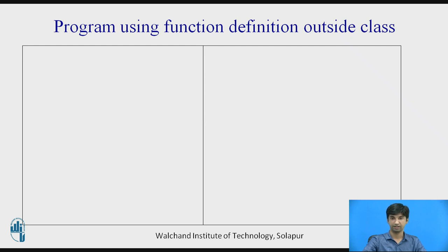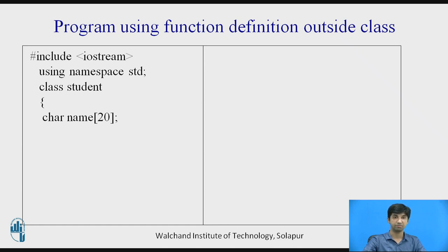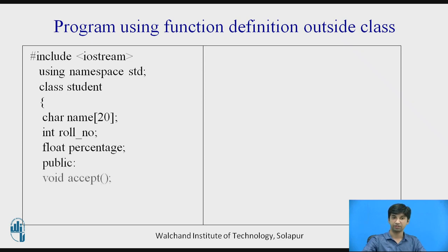And displaying it on the screen finally. The common part is the header file — #include iostream, the input output stream header file, which includes cout and cin. Then 'using namespace std'. Then I declare a class called student. It has data members: char name[20] — name is a variable of maximum 20 characters — int roll number, and float percentage. Public: accept and display functions are declared. Then I end the class.